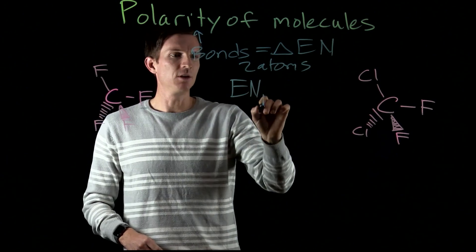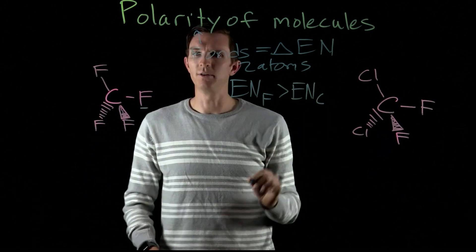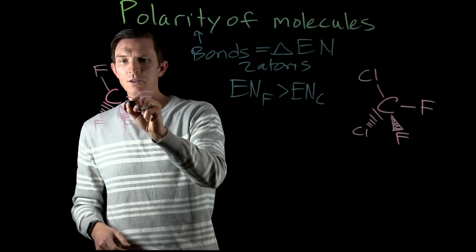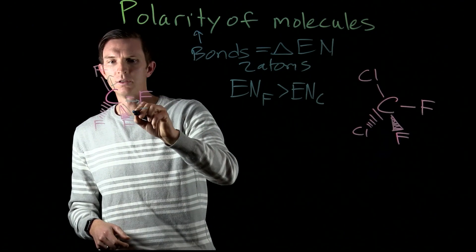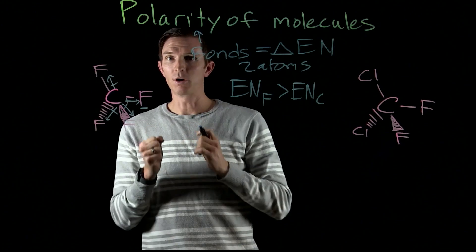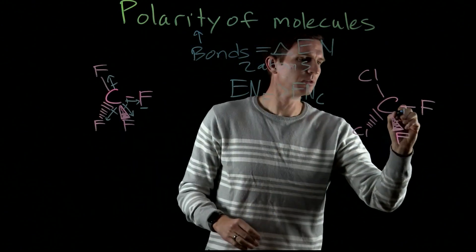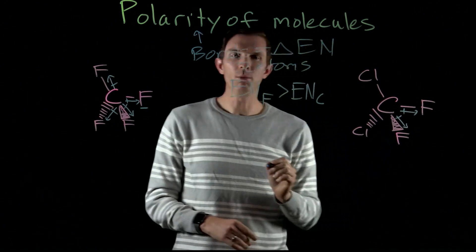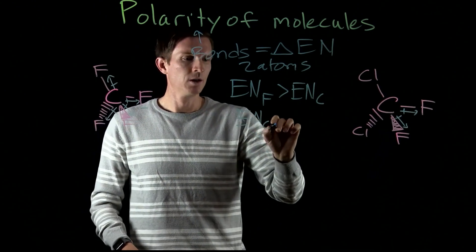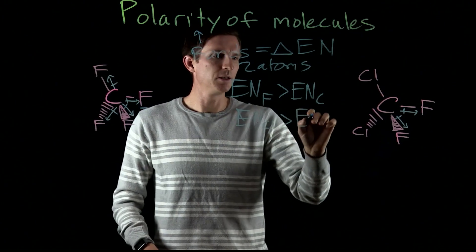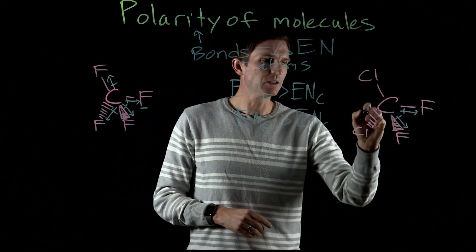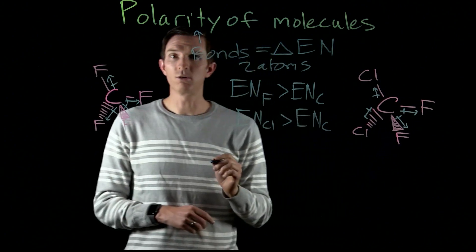Because the electronegativity of fluorine is greater than that of carbon, each fluorine pulls on the electrons more than carbon does, giving each bond an individual dipole moment pointing toward those fluorine atoms and away from carbon. The same is true for the CCl2F2 molecule — the electronegativity of chlorine is also greater than that of carbon, so we get dipole moments pointing toward the chlorines as well.